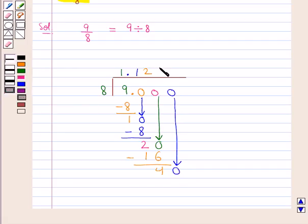We know that 8, 5 times is 40. So we write 40 below 40 and when we subtract this, we get 0.